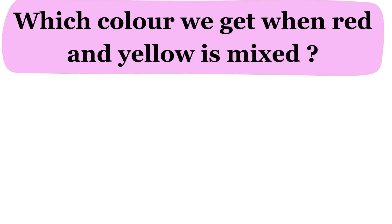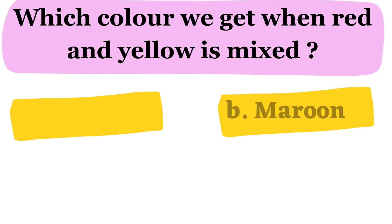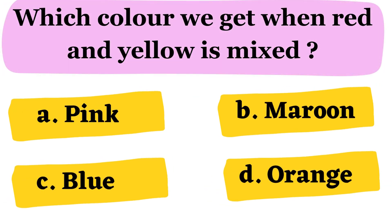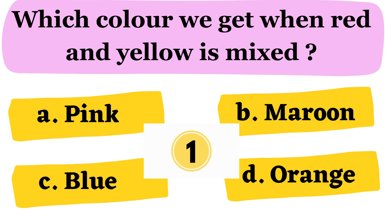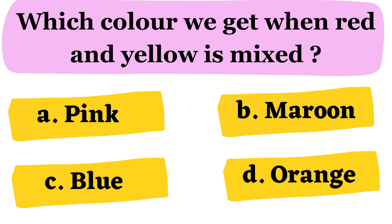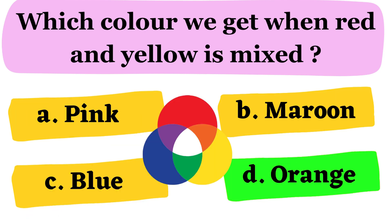Next question. Which color do we get when red and yellow are mixed? A. Pink B. Maroon C. Blue D. Orange. The correct answer is option D. Orange.